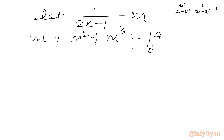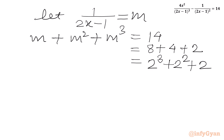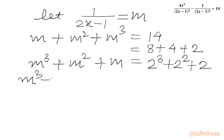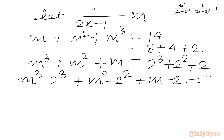Now 14 I can split as 2 + 4 + 8, where 8 is 2³, 4 is 2², and 2 is 2. Rearranging, the left hand side is m³ + m² + m, and taking all terms to the left hand side we get m³ - 2³ plus m² - 2² plus m - 2 equal to 0.